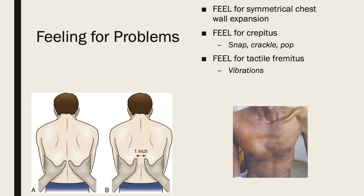We can feel for problems — symmetrical chest wall expansion, and crepitus, especially if a patient has a chest tube. Crepitus is that snap, crackle, pop feeling — like popping bubble wrap — where you can feel air trapped between the skin and the lung. It can be a sign of an air leak and potential breathing difficulty. There's also tactile fremitus, more commonly assessed by advanced practitioners, which involves feeling for vibrations that indicate what's happening in the lungs.